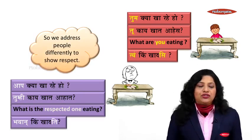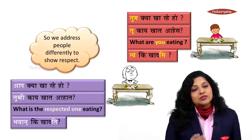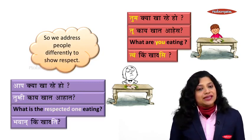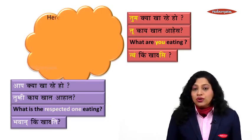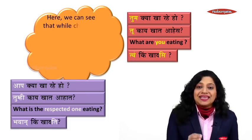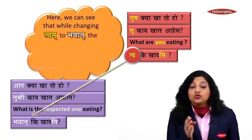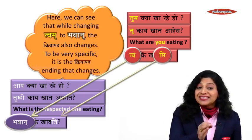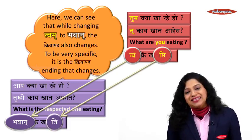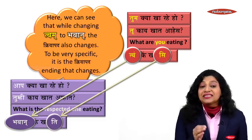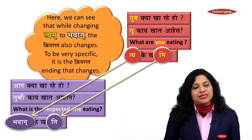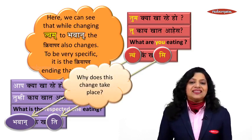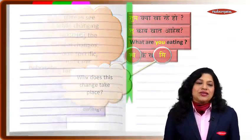So students, there are two different words used when showing respect. If a person is our age, we say 'twam.' If the person is older or respectable, we say 'bhavan.' Notice that when changing from twam to bhavan, the kriyapada also changes — 'khadasi' changes to 'khadati' — because a different pratyaya is used.